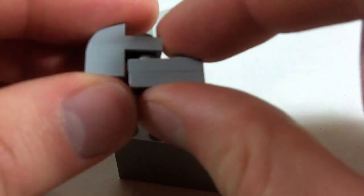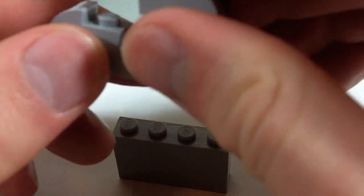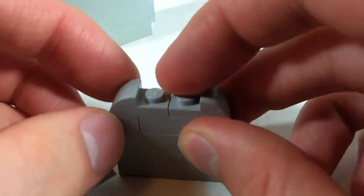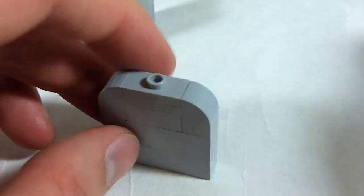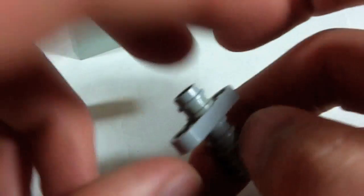This is two 1x2 plates on top of one another, two of those, and then you can either have a 1x2 tile across the top to make it smooth, or here I'm using a jumper plate and then I'm going to add this little cross on top.